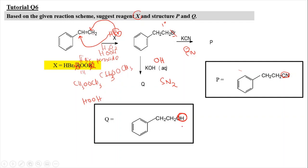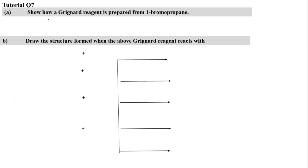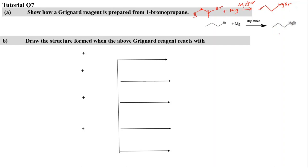For product P, with KCN — the CN⁻ acts as a nucleophile. Because it is a primary haloalkane, CN attaches and Br is removed. So the expected product P replaces Br with CN, and Q replaces Br with OH — both are nucleophilic substitution reactions via SN2 mechanism.